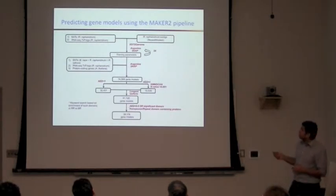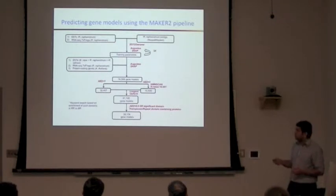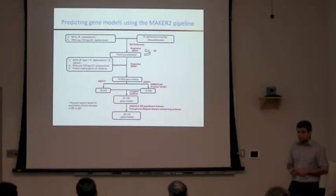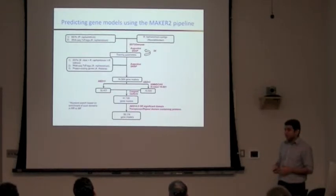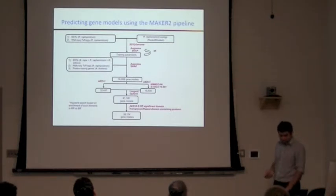To predict gene models, we used a pipeline called MAKER. It takes in EST sequences, protein sequences, RNA-seq transcripts, and genome predictions from computational programs to predict which regions in the genome are genes. We then used filtering based on a measure called AED, or Annotation Edit Distance, to determine which of the 74,000 predicted gene models were of good quality. Based on several filtering steps, we arrived at 38,000 gene models in Radish, comparable to Brassica's approximately 41,000 genes. Using all gene models from Brassica, Radish, Arabidopsis thaliana, and Arabidopsis lyrata, we generated orthologous groups using RAxML and multiple sequence alignment.